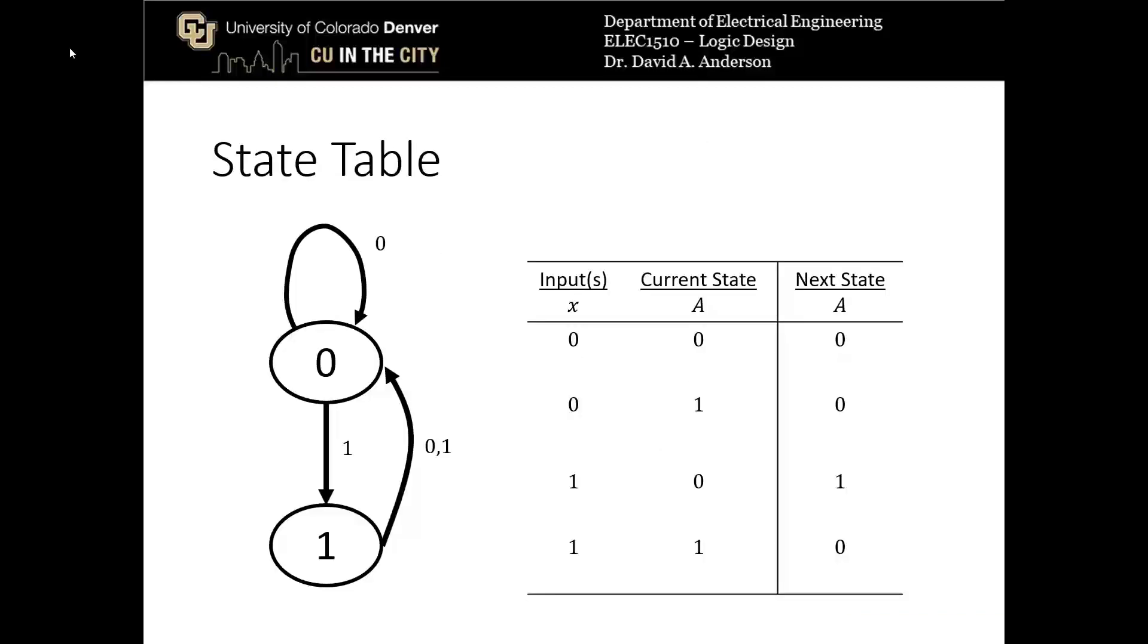Here's the state diagram and the state table from the simple example in the previous video. In this state machine, we have states 0 and 1 represented by a single variable. That variable is a. We have a single input x and then the next state is the same variable as the current state a. So we formulated the state table in the previous video. The next state is only ever 1 when the current state is 0 and the input x is a 1.